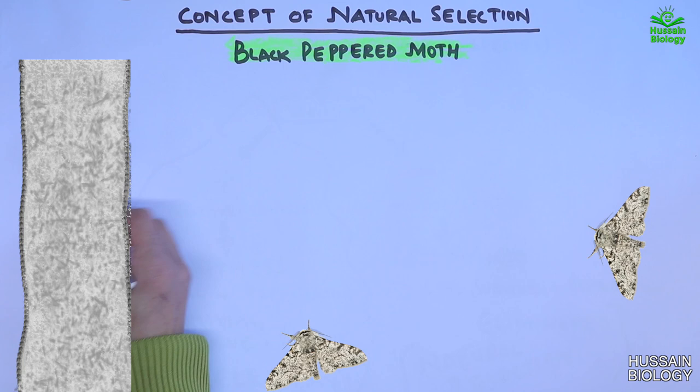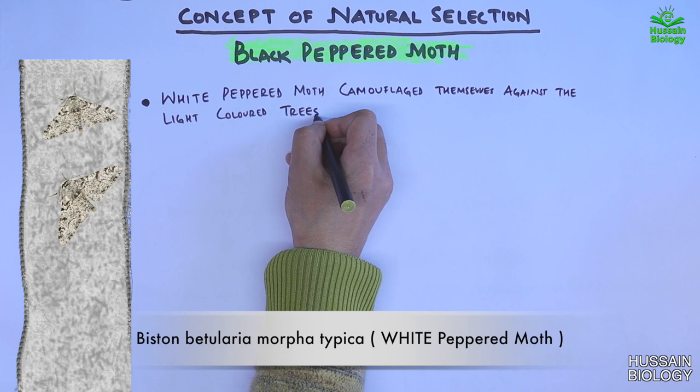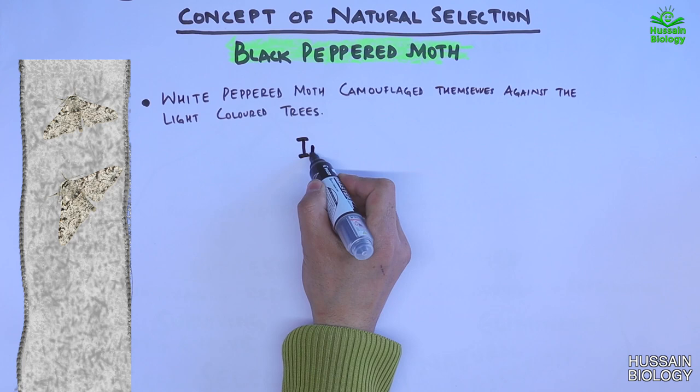In the early 19th century, we had an abundance of light-colored moths in England, which used to camouflage on light-colored tree trunks, thus giving them an edge to avoid the predators.